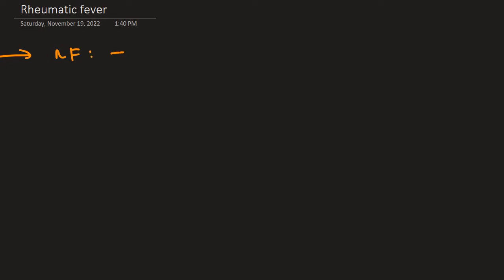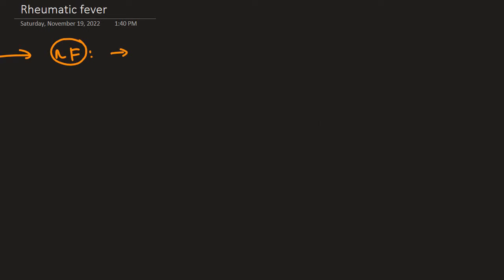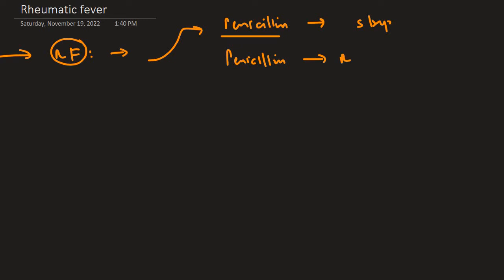The next point is about rheumatic fever. Penicillin is used for treating strep throat or strep pharyngitis, and it is also important for prophylaxis against rheumatic heart disease. So penicillin is important for both treatment and prophylaxis in the context of rheumatic fever.